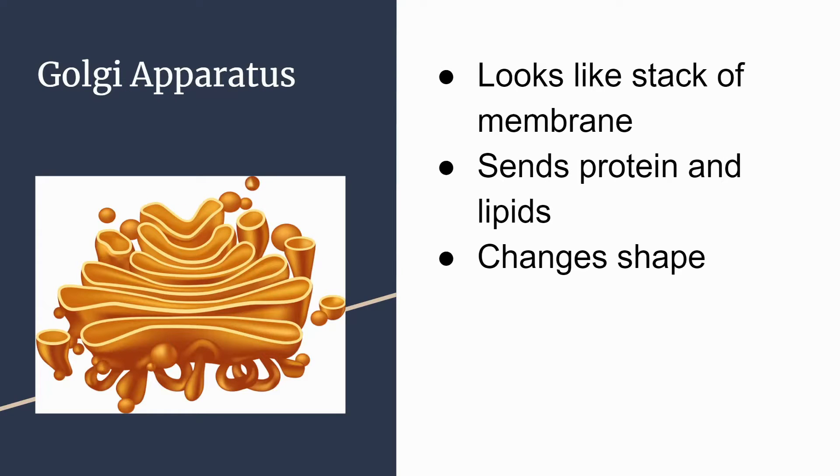The Golgi apparatus is an organelle that looks like a stack of different membranes. It helps pack and send different proteins and lipids to other parts of the cell, and it can also change the shape and size of specific proteins.